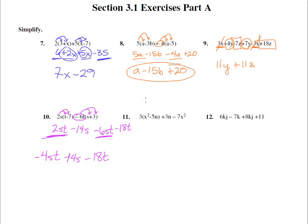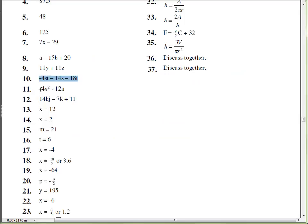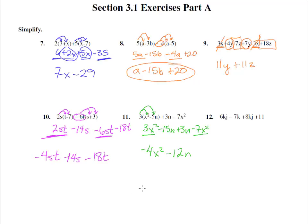Number 11. We do have parentheses, so let's distribute so these terms can combine with things outside the parentheses. 3x²-15n+3n-7x². Here's a 3x² and there's a -7x² that can go together and make a -4x². -15n and +3n, that's -12n. Let's double check that answer. -4x²-12n. And we can't put those together anymore.